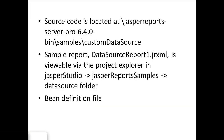Now the three parts of this example are as follows. First, you have the source code, which we're going to modify, and this source code is available in the samples folder of any Jasper Reports Server installer. The second is the sample report, which is going to make use of the Bean data source we're going to create. And lastly, we have the Bean definition file, which is needed by the Jasper Reports Server application in order to detect the Bean.